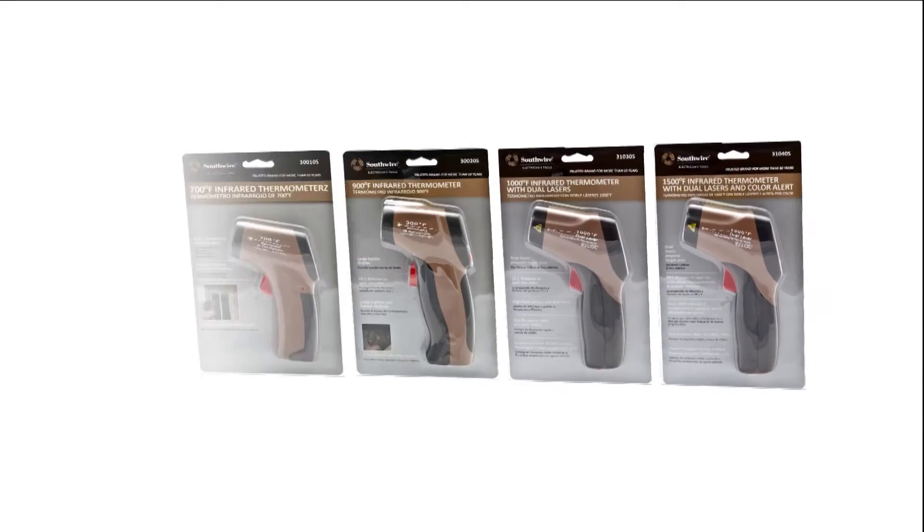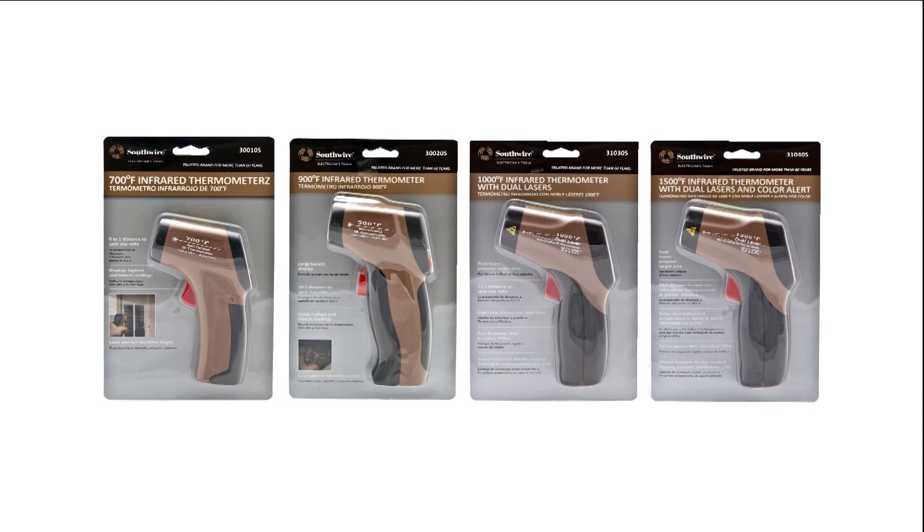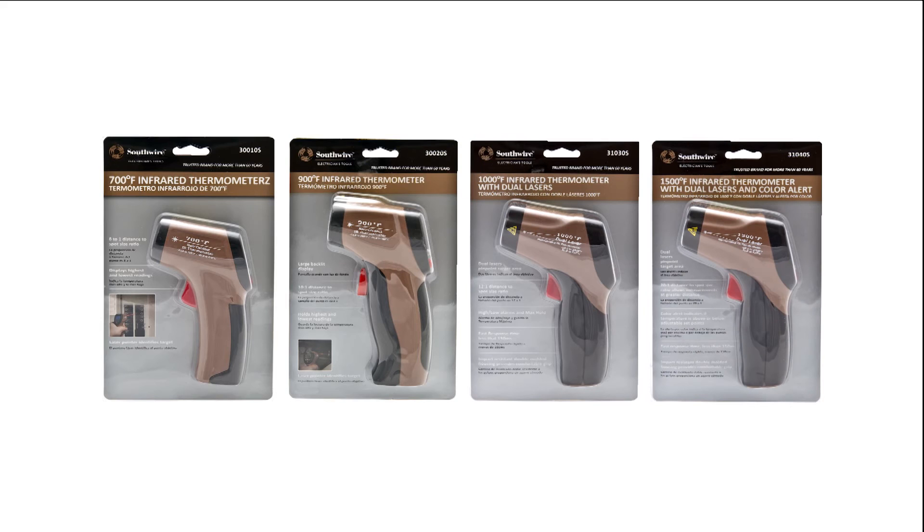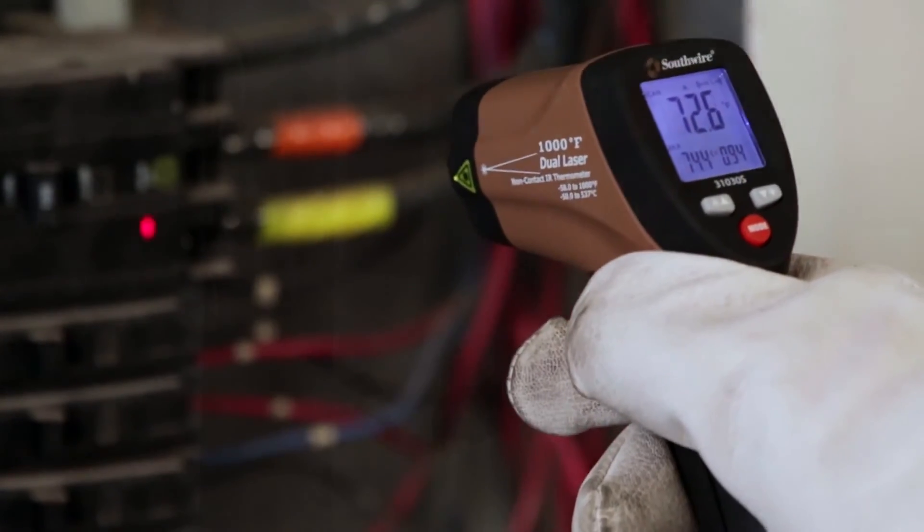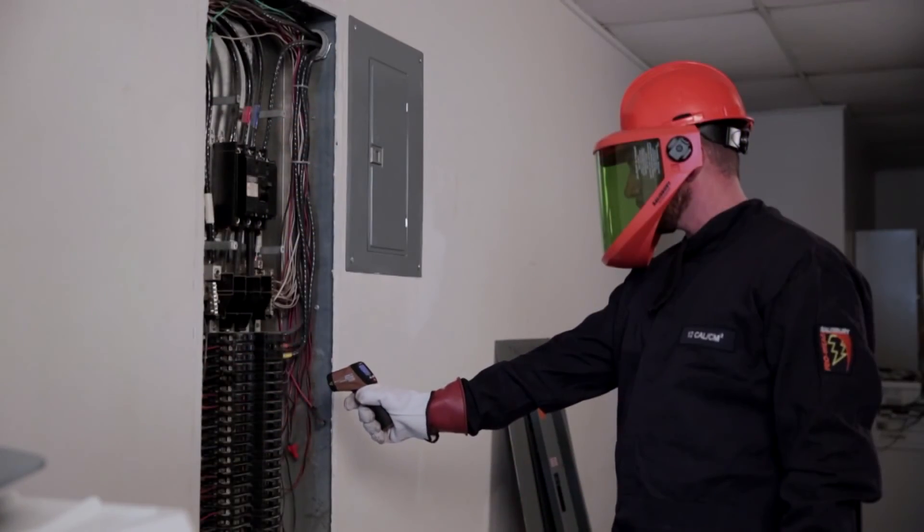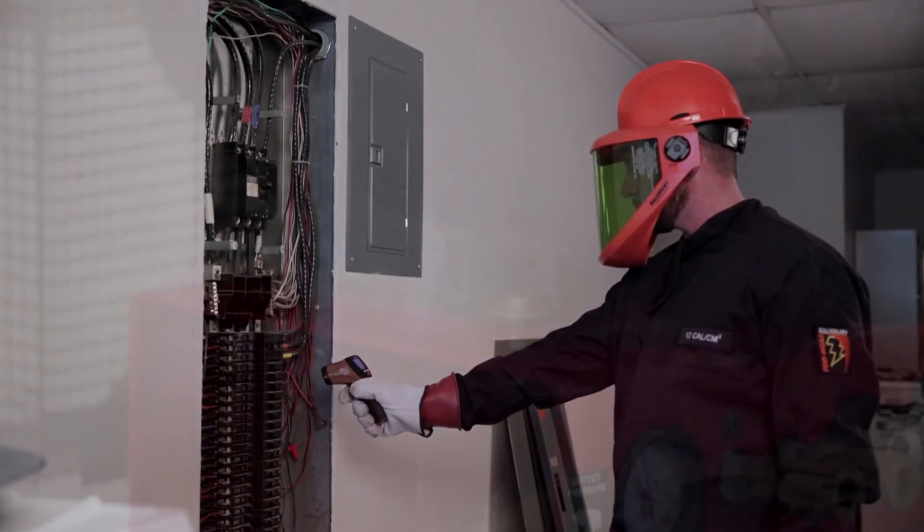Southwire has four different IR thermometers, but two of them, the 31030S and 31040S, offer a couple of important advantages over the competitors in the same price range. Converging laser pointer and faster response. These models have a response time of less than 150 milliseconds, which is much faster than competitive models.